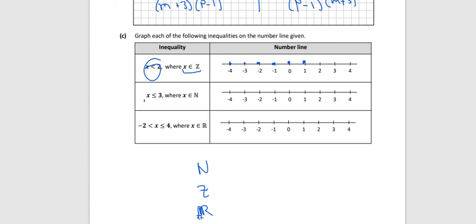Next one, x is less than or equal to 3 and it's an element of the natural numbers. That means it can't be anything negative. So it's less than or equal to 3, that means it could be 3, it could be 2, and it could be 1. Now it can't be 0, 0 is not considered to be a natural number.